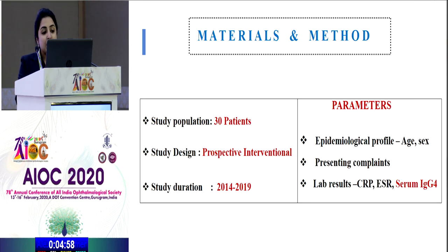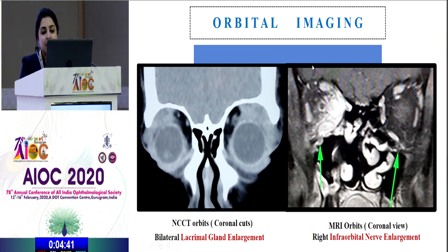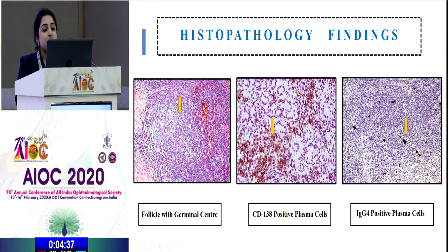We conducted a prospective intervention study between 2014 and 2019 on 30 patients. Parameters analyzed included epidemiological profile, presenting complaints, and lab results. All patients underwent orbital imaging — this example shows a CT scan coronal cut with bilateral lacrimal gland enlargement, and an MRI showing infraorbital nerve enlargement. All patients also underwent incision biopsy, with typical histopathological findings including germinal centers and IgG4-positive cells.